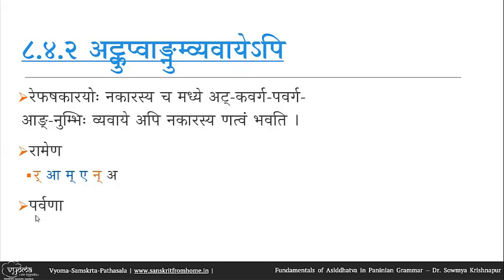Another example: parvana — we have repha and nakara with va and a in between, both being 'at' letters, so there is natva. However, in vardhanam, there is repha followed by dhakara, akara, then nakara — akara is 'at' but dhakara does not belong to any of the allowed categories, and therefore there is no natva. We have vardhanam.